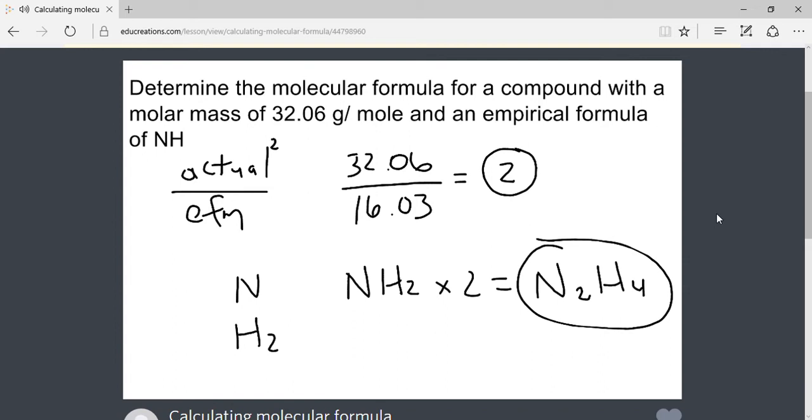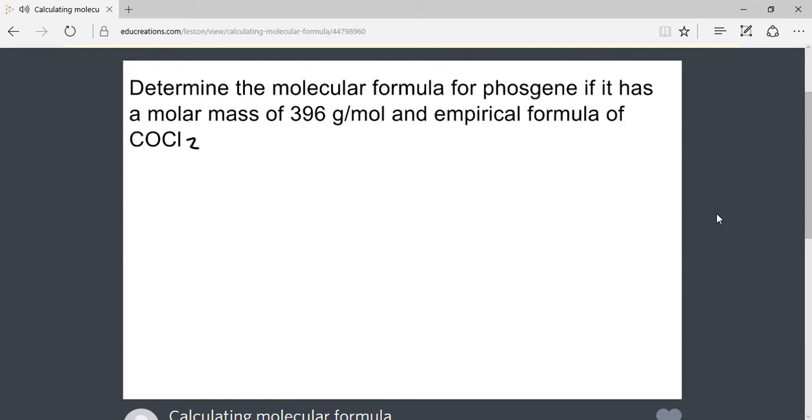Let's look at one more example. We want the molecular formula for phosgene. The molar mass is 396 grams per mole. We make a ratio of the molar mass to the empirical formula mass. The empirical formula COCl2 contains one carbon, one oxygen, and two chlorine, giving an empirical formula mass of 98.91.